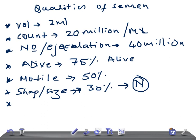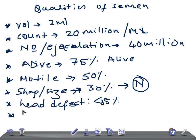Regarding structural defects: sperms with head defects must be less than 35%. Sperms with mid-piece defects must be less than 20%. The mid-piece is the middle part of the sperm. Sperms with tail defects must also be less than 20%.